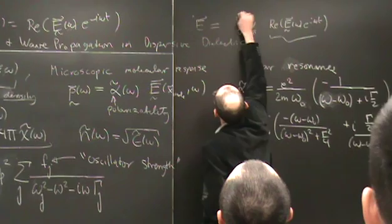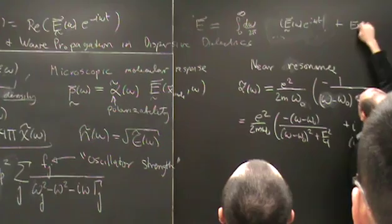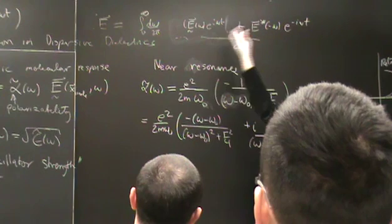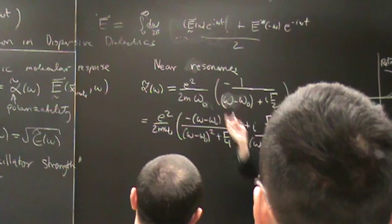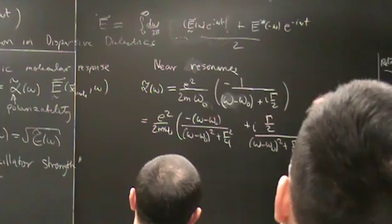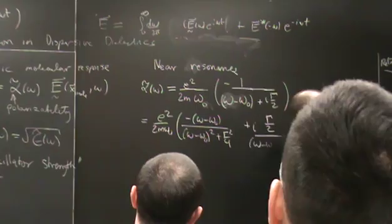I put the integral limit from zero to infinity because if I write the signal as this plus its complex conjugate over two—which is the real part—then I have the integral from minus infinity to infinity, which is the Fourier transform. So the positive frequency component is the complex amplitude for multiple frequencies. There is a factor of two to account for, which is handled by taking twice the real part.